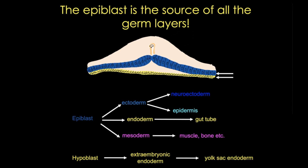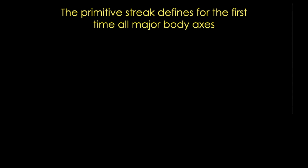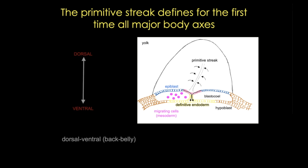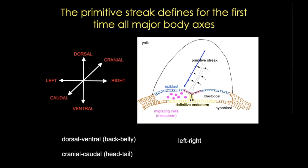With the formation of the primitive streak and gastrulation, we can now appreciate all the major body axes. With the primitive streak on the top surface, we can see the epiblast, hypoblast, and the movements forming definitive endoderm and mesoderm. These axes include the dorsal-ventral axis (back to belly, ectoderm versus endoderm), the left-right axis first established by nodal signaling, the cranial-caudal or head-to-toe axis, and the medial-lateral axis with the primitive streak marking the medial aspect of the embryo.